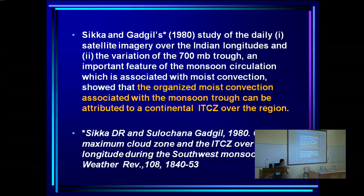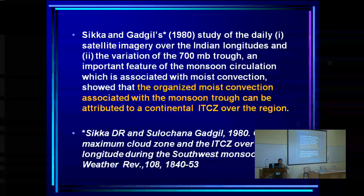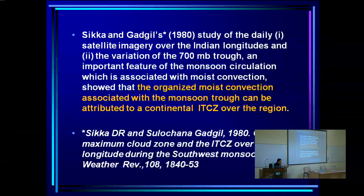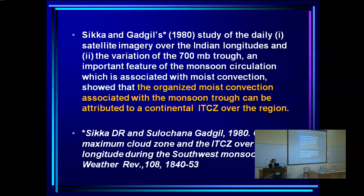What actually gave evidence that the second hypothesis is the reasonable one was some work we did in 1980. It was the first study to look at daily variation of satellite imagery — satellite imagery had just become available. We did not have digital data like gridded outgoing longwave radiation, which you can now readily download. All we had was pictures, so we looked at the pictures every day for five years of data.